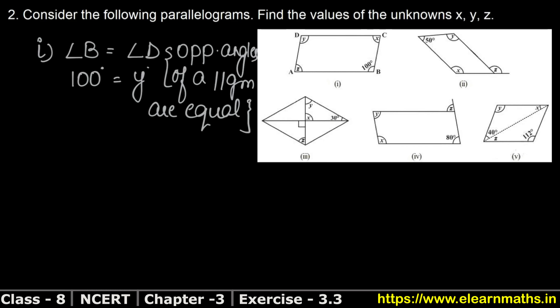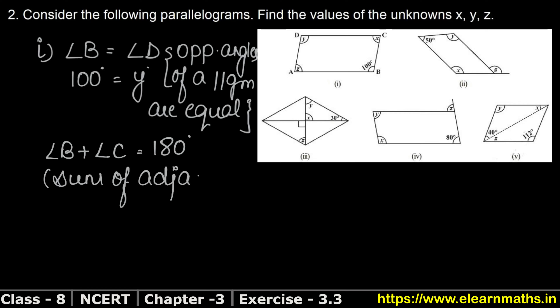Now y is found. Next we need to find x and z. AB and BC are adjacent sides, and BC and CD are adjacent sides. The angles formed on adjacent sides have a sum of 180 degrees. So we can say angle B plus angle C equals 180 degrees, because the sum of adjacent angles in a parallelogram are supplementary.